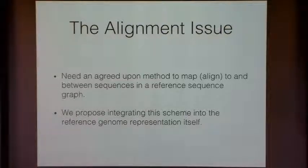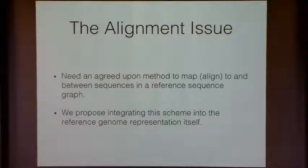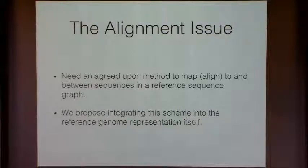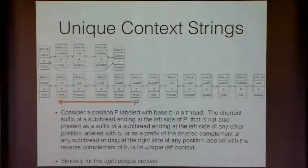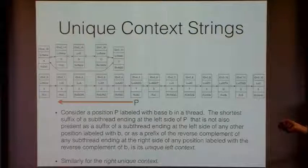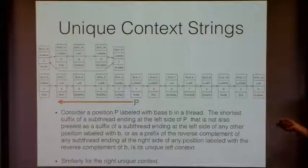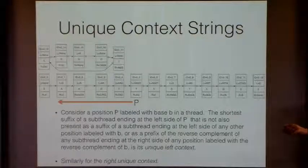We need to think about how we can take any DNA sequence and map it into our reference. A property of the reference genome should be a scheme for mapping any DNA sequence into it — we call that a reference structure. It's a reference genome expressed as a sequence graph plus a rule for mapping any position in any DNA sequence into that reference genome. That should be part of the definition of the reference genome we use as a standard. Here's an example of a simple scheme — we call these unique context strings — contained in little strings on the left and right of each position.